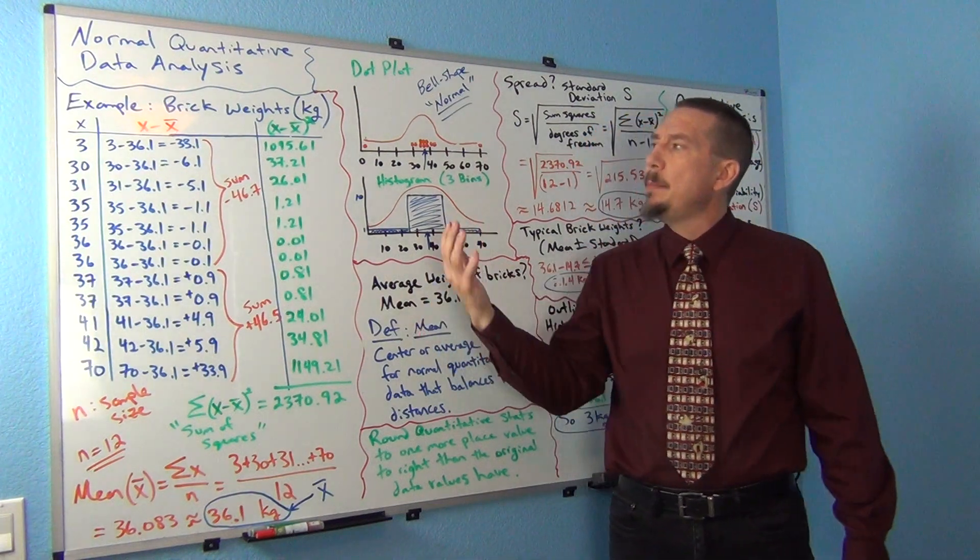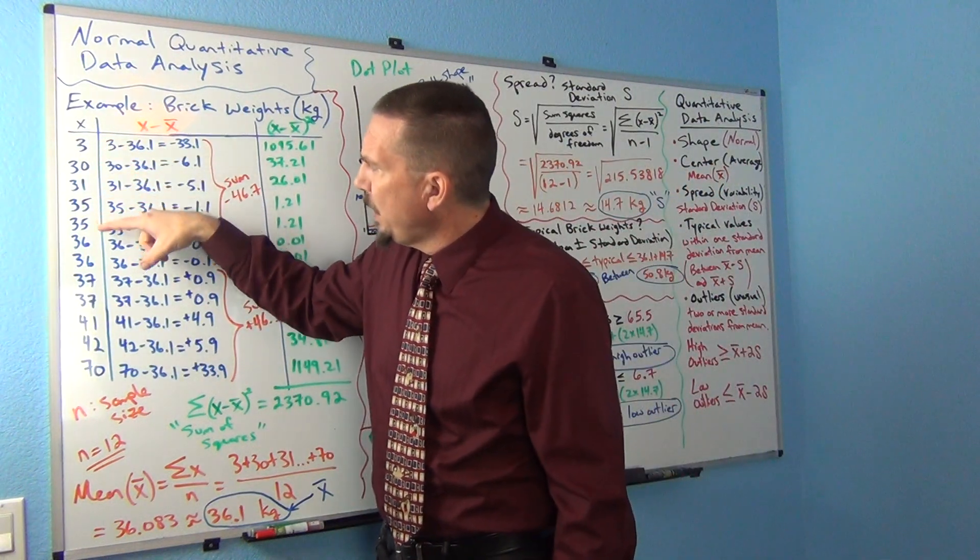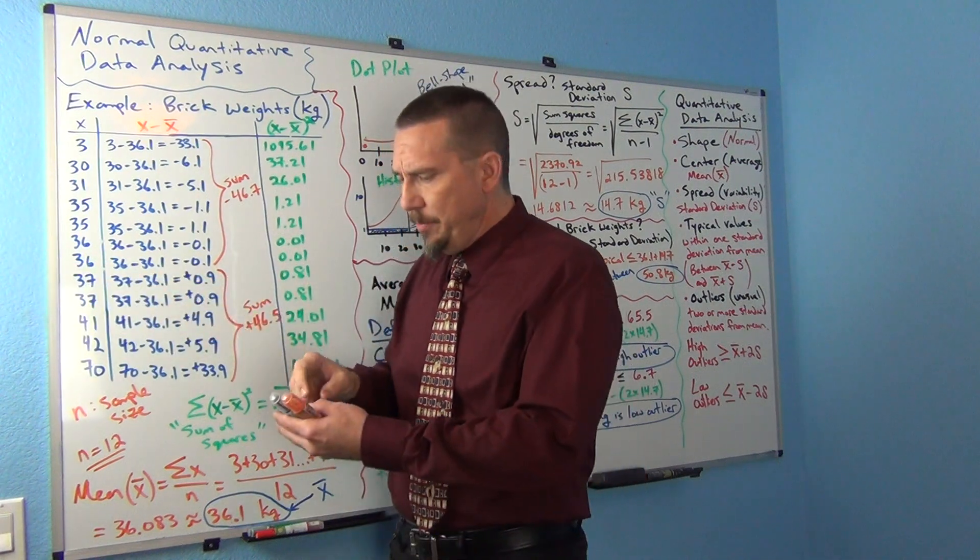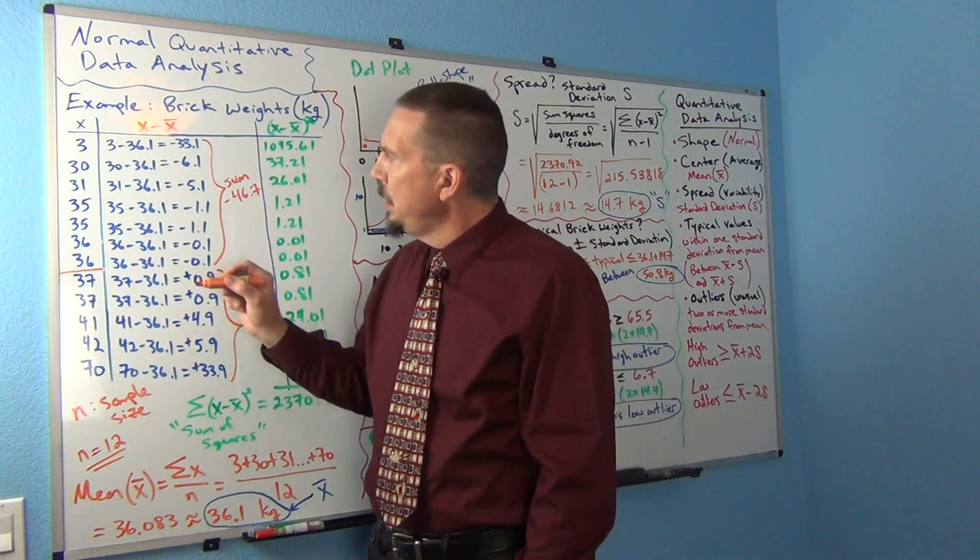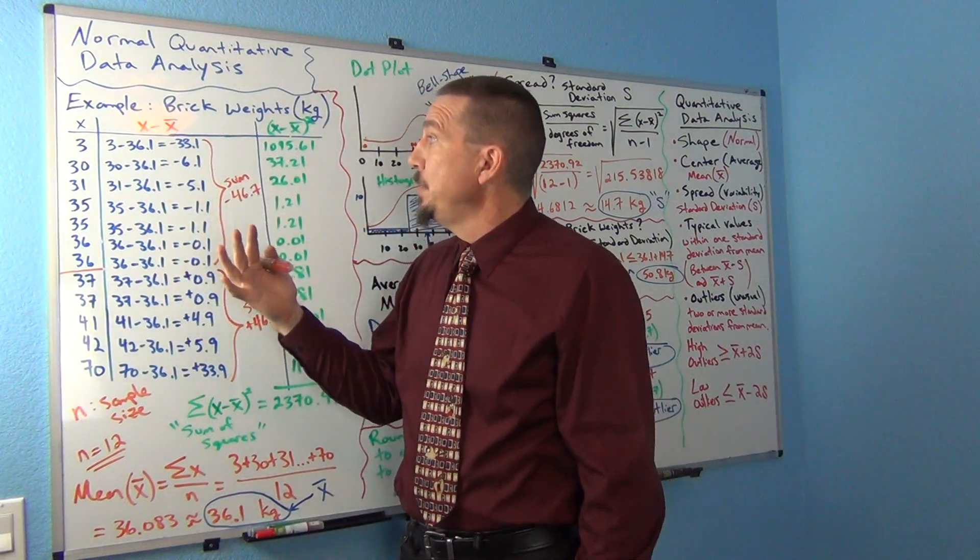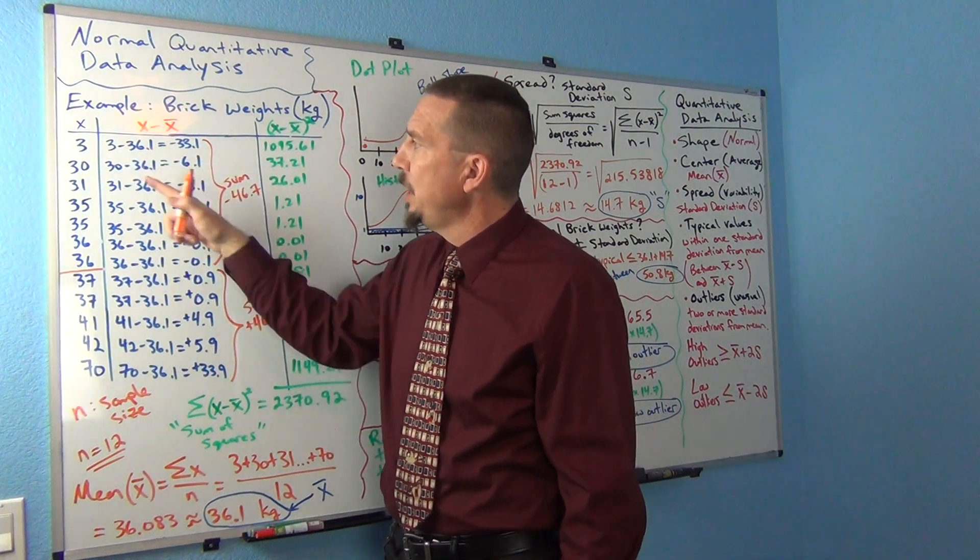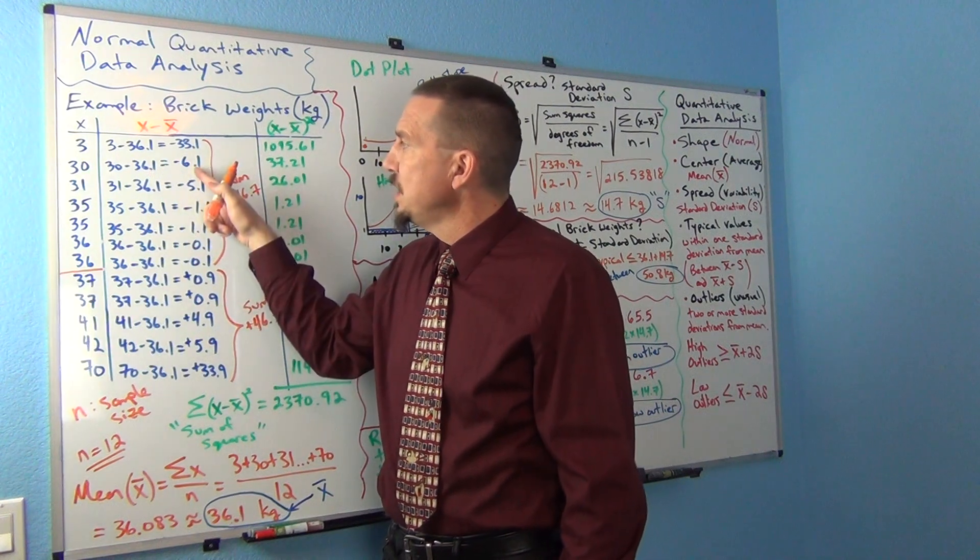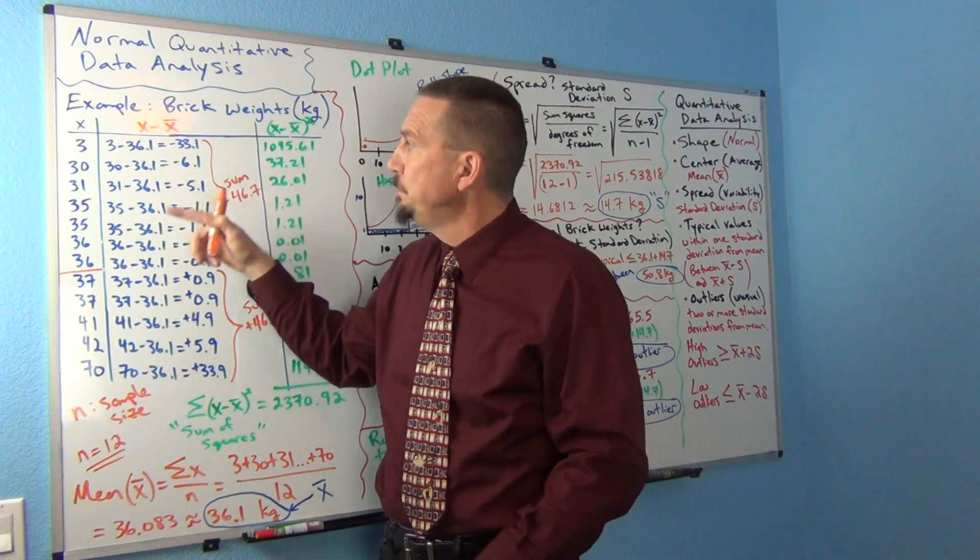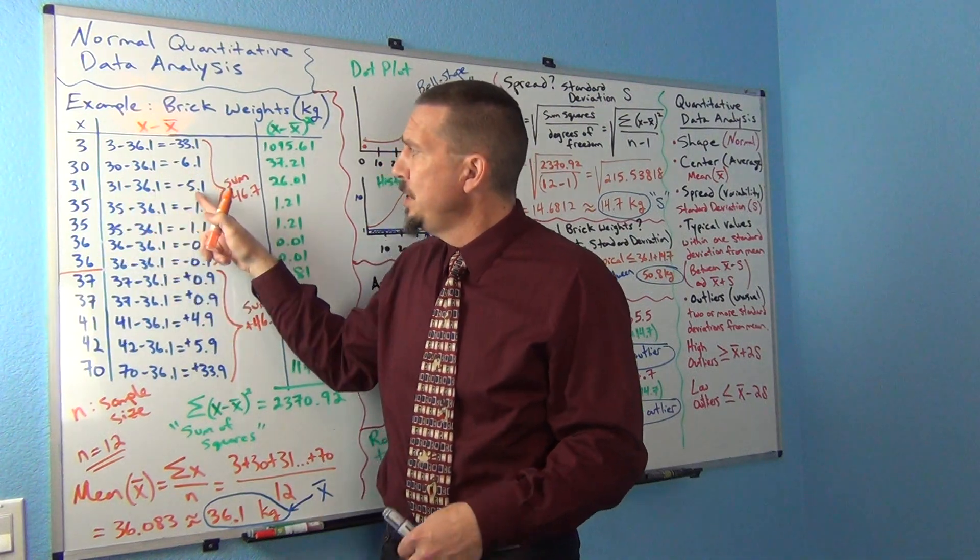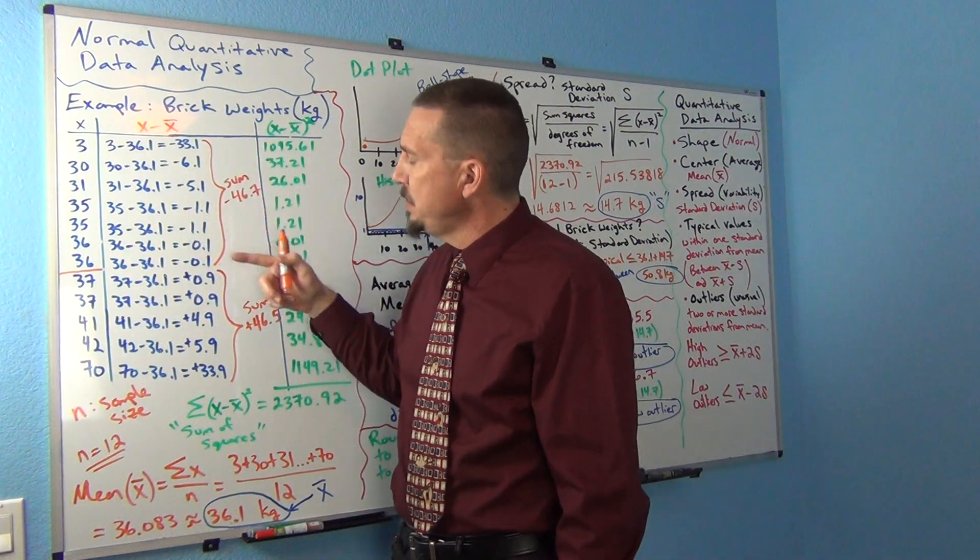If we looked at every number below the mean, all of these first 7 numbers here are all below the mean, below 36.1. If I see how far all of them are from the mean, like 3 minus 36.1, I'd get negative 33.1. 30 minus 36.1 is negative 6.1, so 30 is 6.1 kilograms below the mean. 31 was 5.1 kilograms below the mean, and so on. These negative differences...